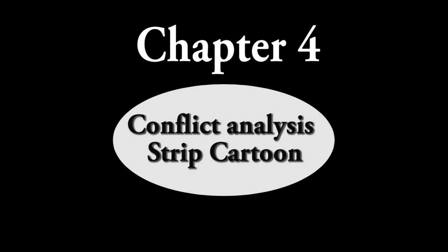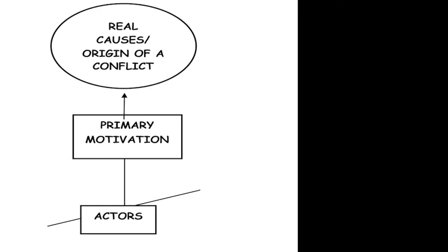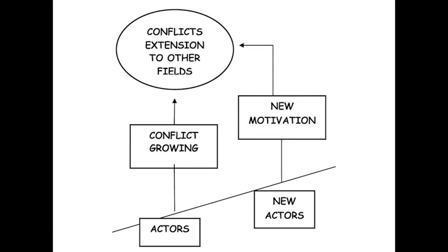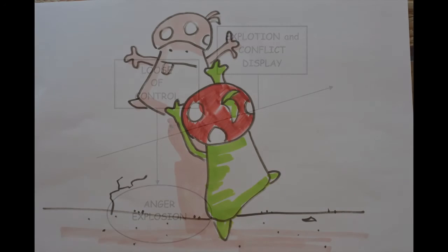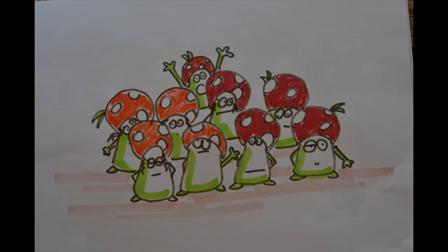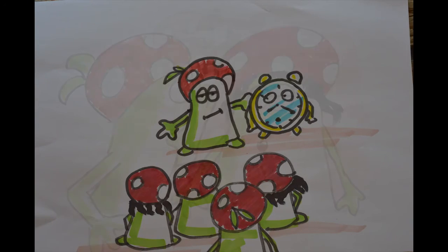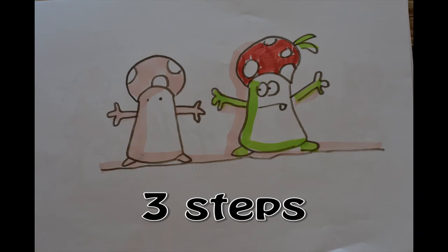Strip cartoons is a role-play activity which follows the conflict explosion model. The model shows us how a conflict develops. The main steps are: origins of conflict and real causes, then conflict extension, arriving to the explosion of the conflict. To realize the strip cartoons, divide participants in small groups, giving them the assignment to replicate in 3 passages the conflict explosion.